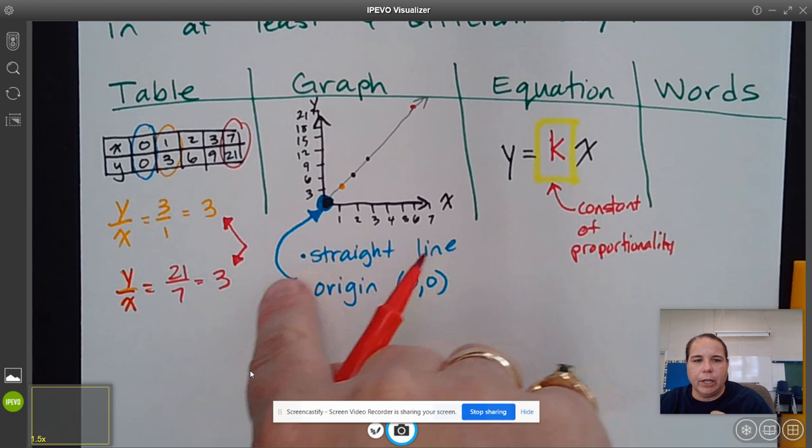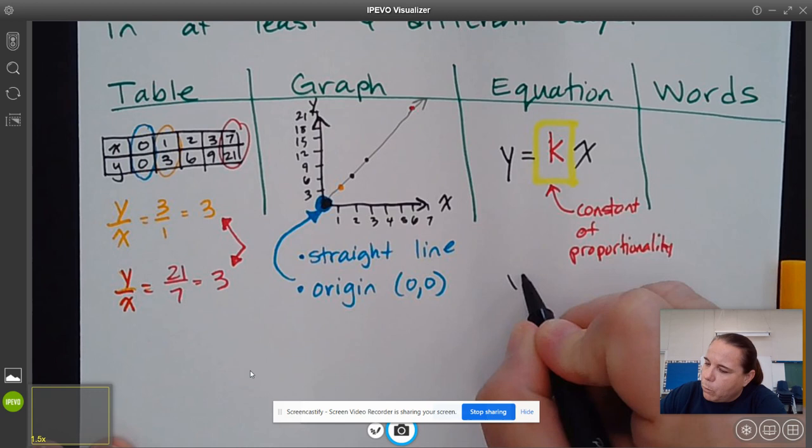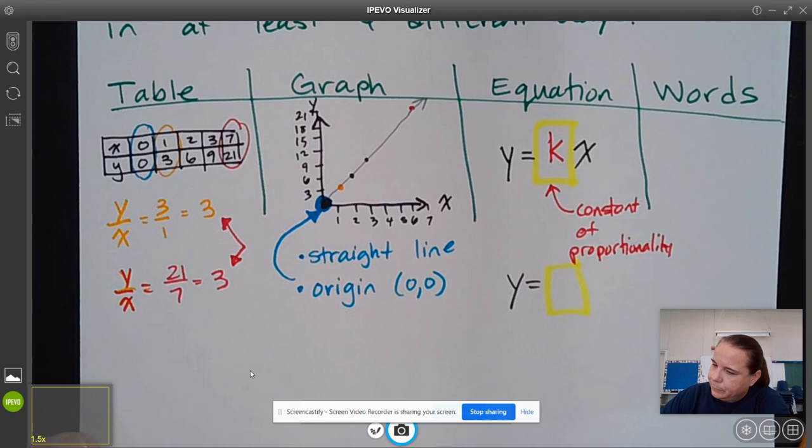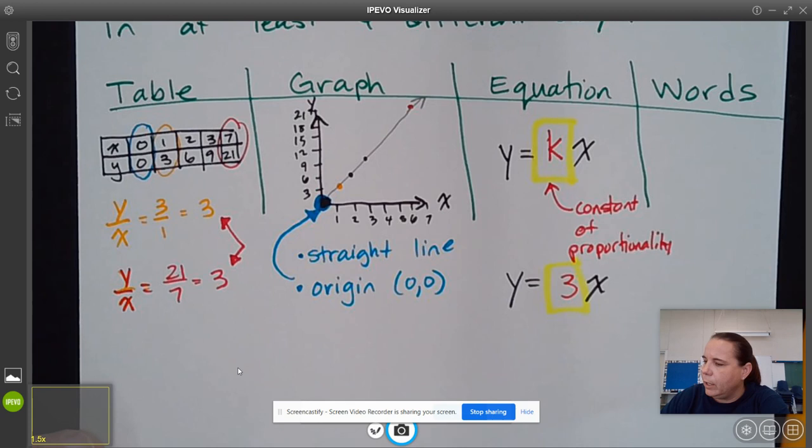And so we can see that this constant of proportionality for this example that we're using is 3. So our equation for this one would be y equals 3 times x. So whatever this ratio is, we can put it into an equation that looks like this.